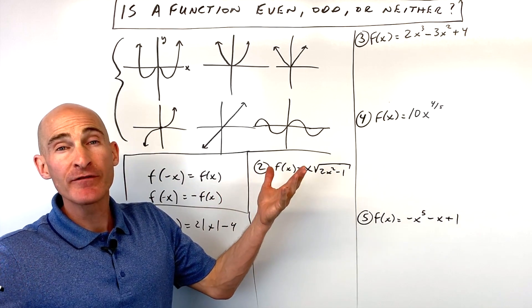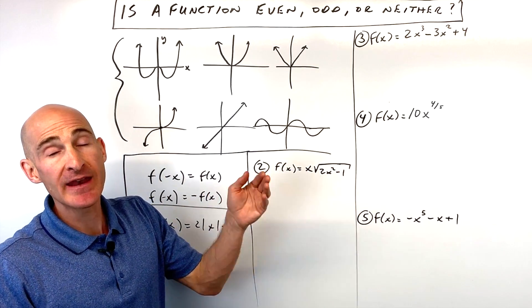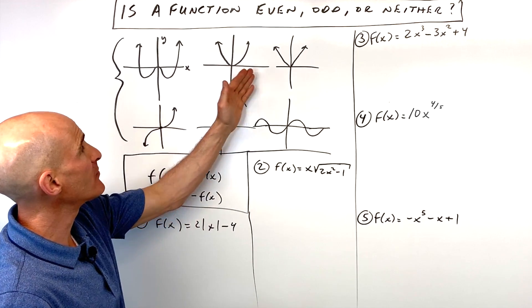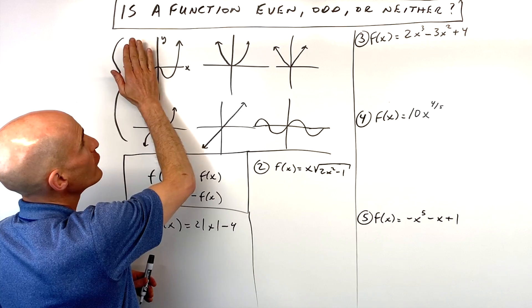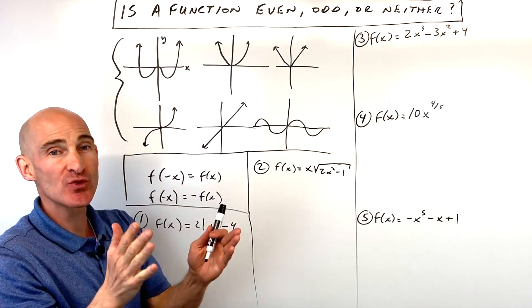There's a couple different methods for determining whether a function is even or odd. Graphically, if you have a picture of the graph where you can graph it, you can tell it's even if when you reflect it over the y-axis it matches with itself.